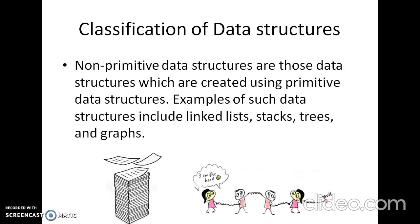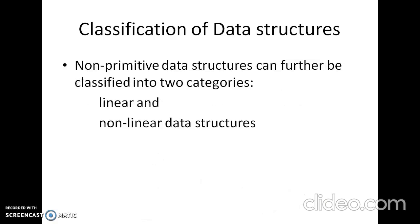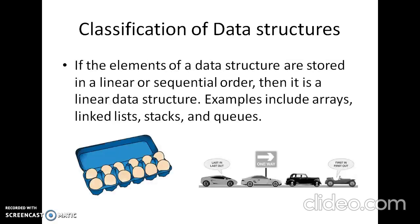Non-primitive data structures are those data structures which are created using primitive data structures. Examples of such data structures include linked list, stack, tree, and graph. Non-primitive data structures can further be classified into two categories: linear and non-linear data structures. If the elements of the data structure are stored in a linear or sequential order, then it is a linear data structure. Examples include array, linked list, stack, and queue.